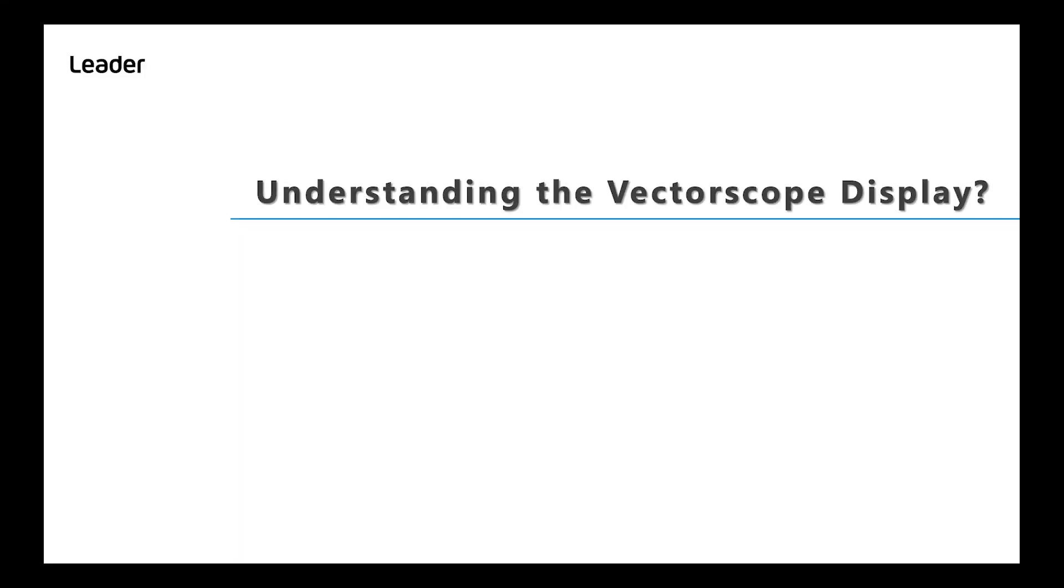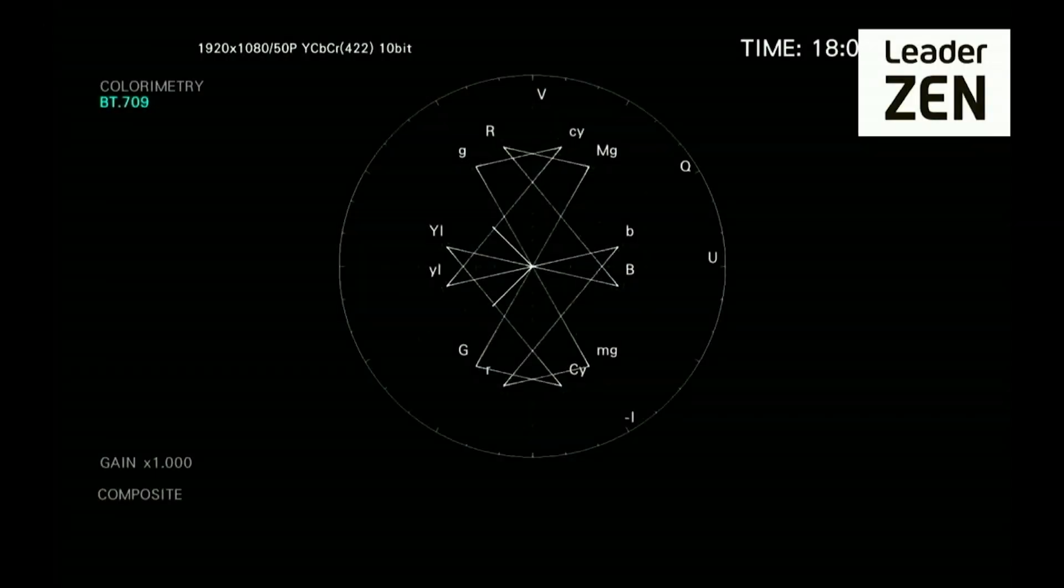So let's take a closer look at the vectorscope display. The actual visual pattern that the incoming chrominance signal draws on the vectorscope is called the trace.